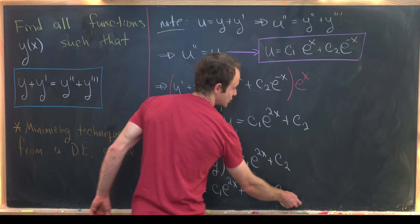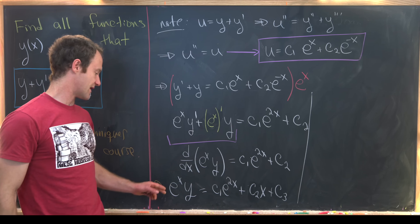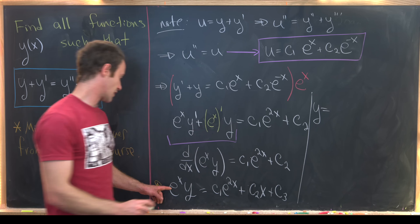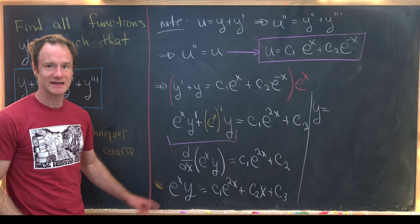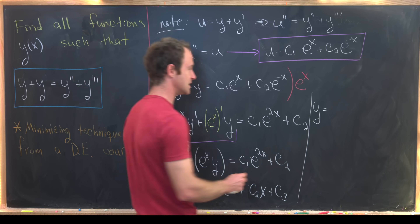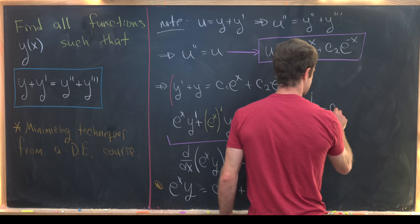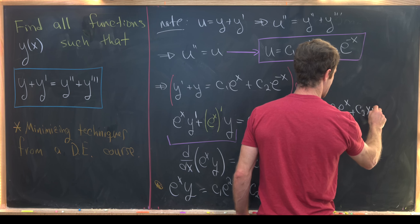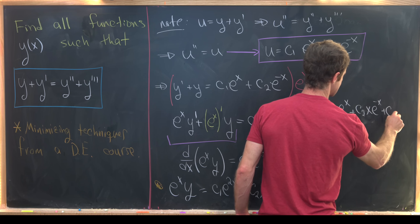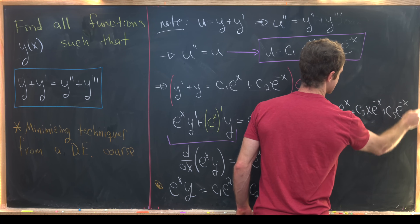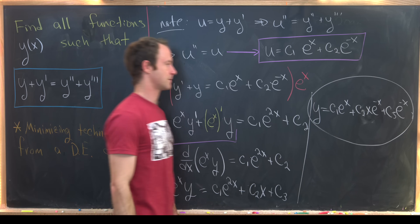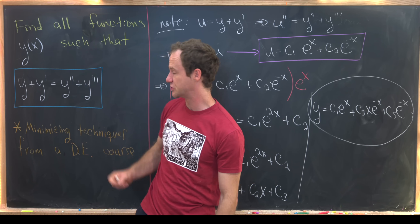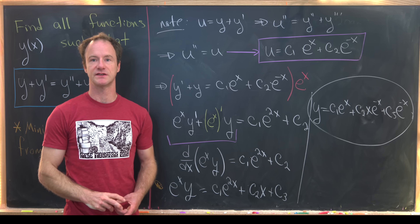Now we put it all together by multiplying both sides by e to the minus x to solve for y. That gives us the final solution: y equals c1 e to the x plus c2 x e to the minus x plus c3 e to the minus x. And that's our final solution to the original equation.